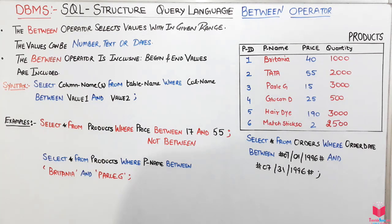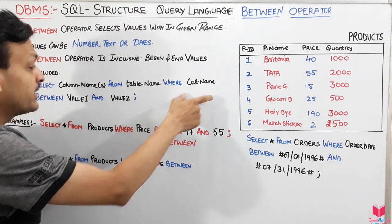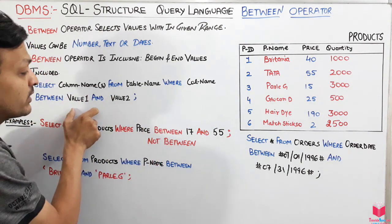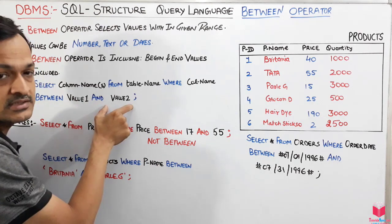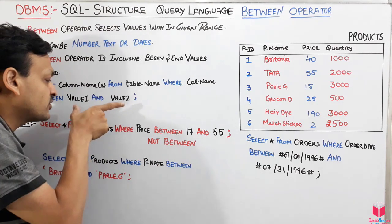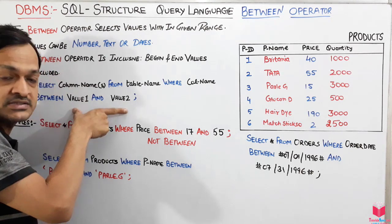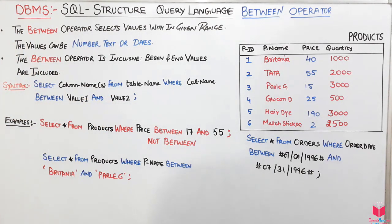The syntax is: SELECT column_names FROM table_name WHERE column_name BETWEEN value1 AND value2 — that is the first range and the last range. The value should match considering the first, last, and between values.